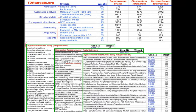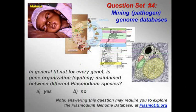We could turn these same computational approaches to look at non-eukaryotic microbes, such as Mycobacterium tuberculosis, the causative agent of tuberculosis. Finally, let me bring you back to the last set of questions for this lecture. Question 4.1: In general, if not for every gene, is gene organization — or synteny — maintained between different Plasmodium species? A: Yes, or B: No.